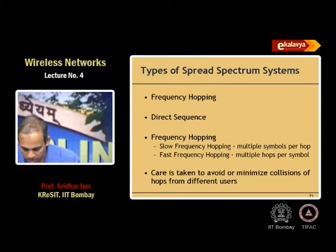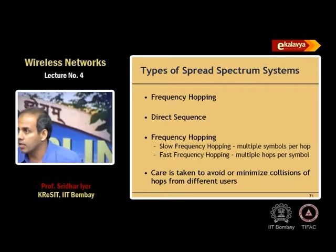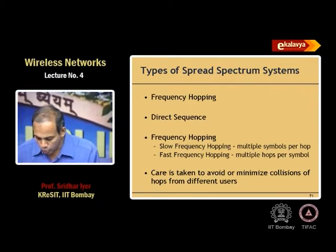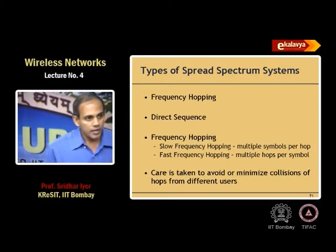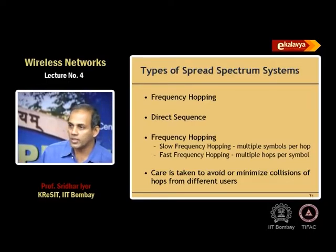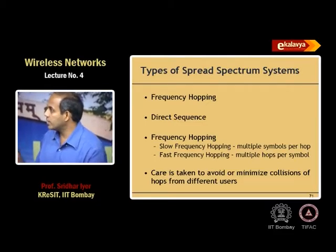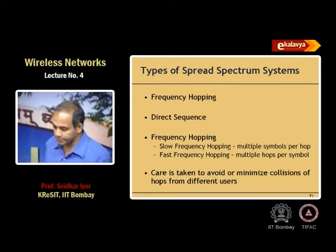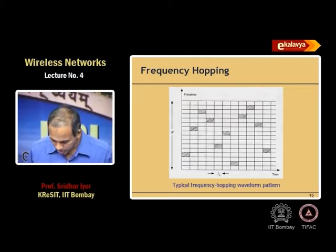There are two types of spread spectrum systems: frequency hopping and direct sequence. The direct sequence one is the more popular one. Frequency hopping basically means you transmit on a particular frequency for a while, then hop to another frequency, transmit there for a while, then hop to a third frequency and so on.